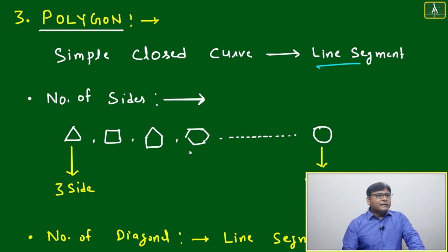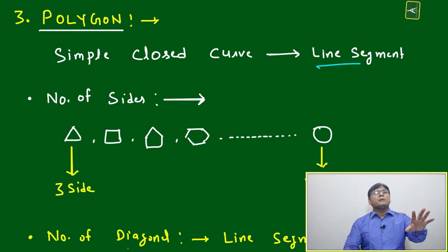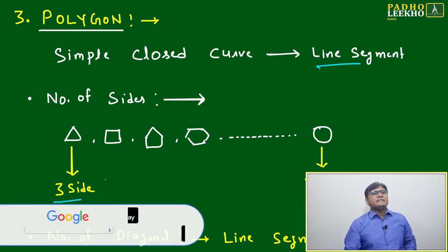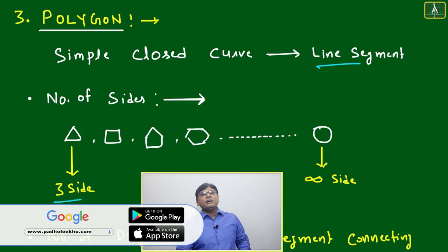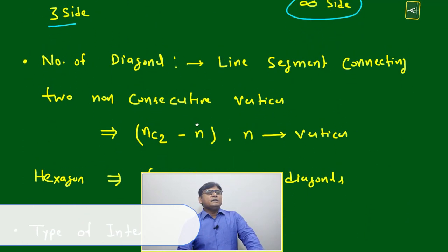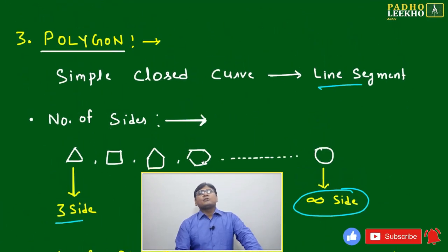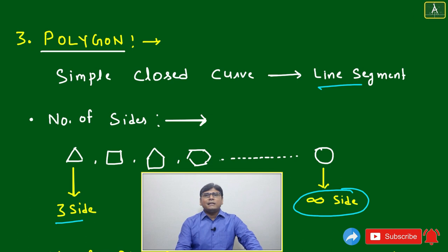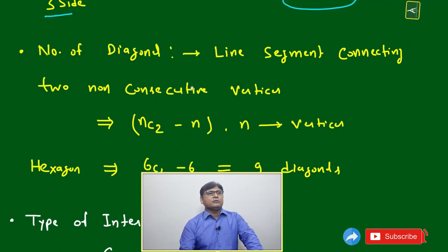Now a polygon can be divided into different categories. One division is based on the number of sides. If the number of sides is three, it is a triangle; four is a quadrilateral; then pentagon, hexagon. Finally, with infinite sides it will become a circle. In another way, if sides are equal it is a regular polygon; if sides are not equal, it is an irregular polygon.